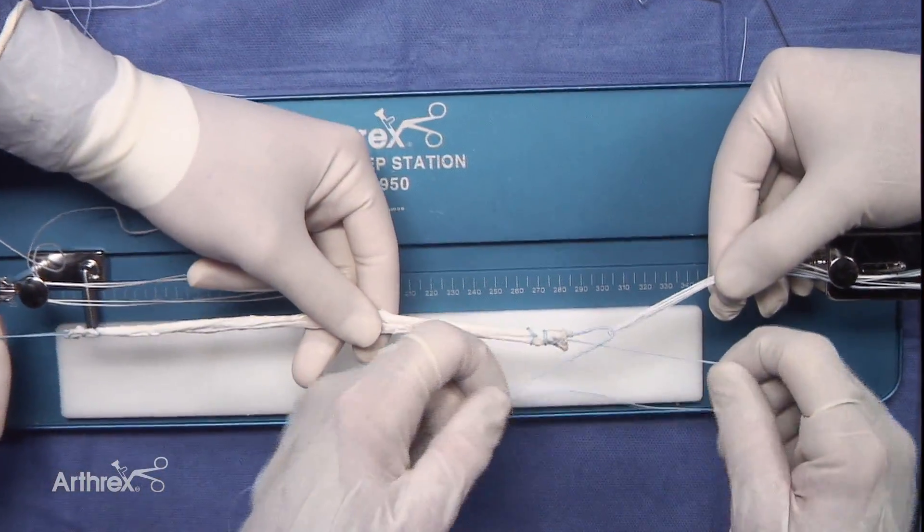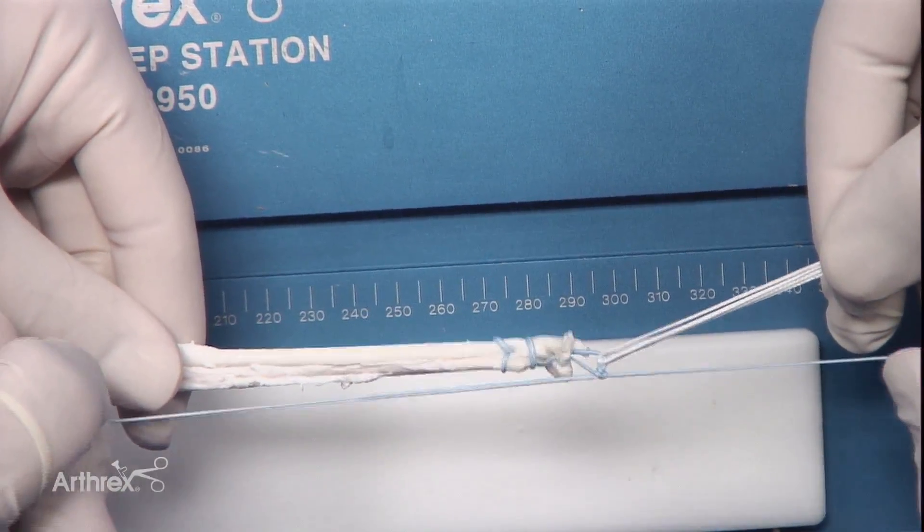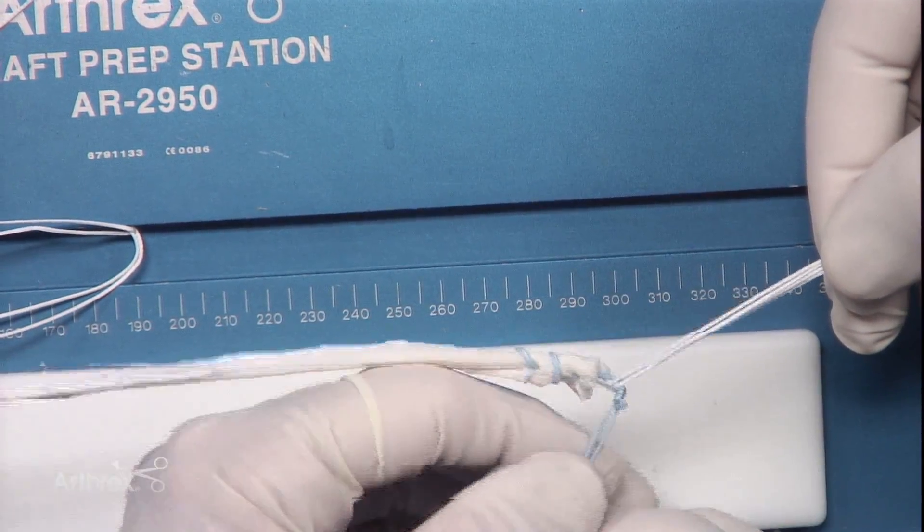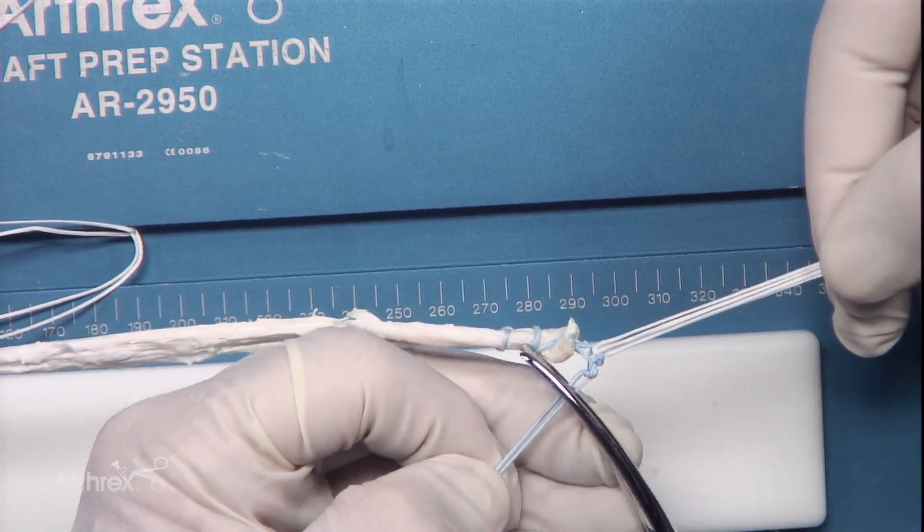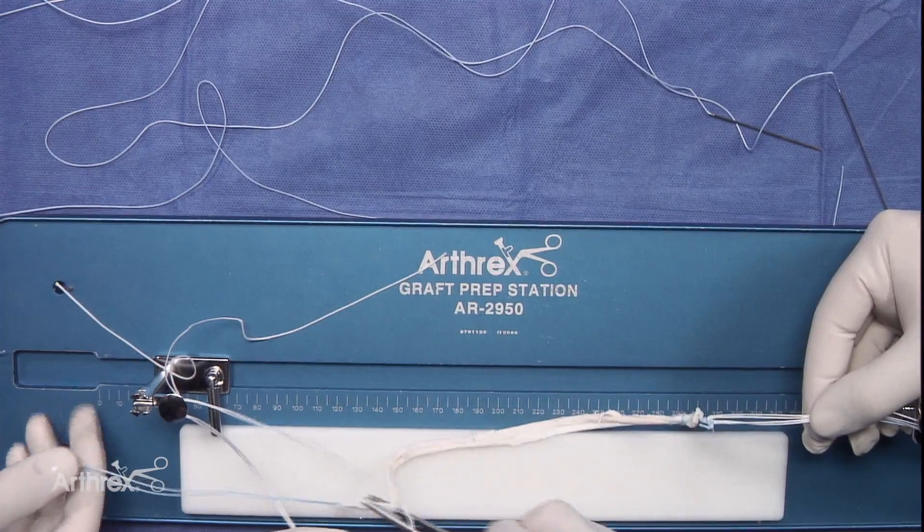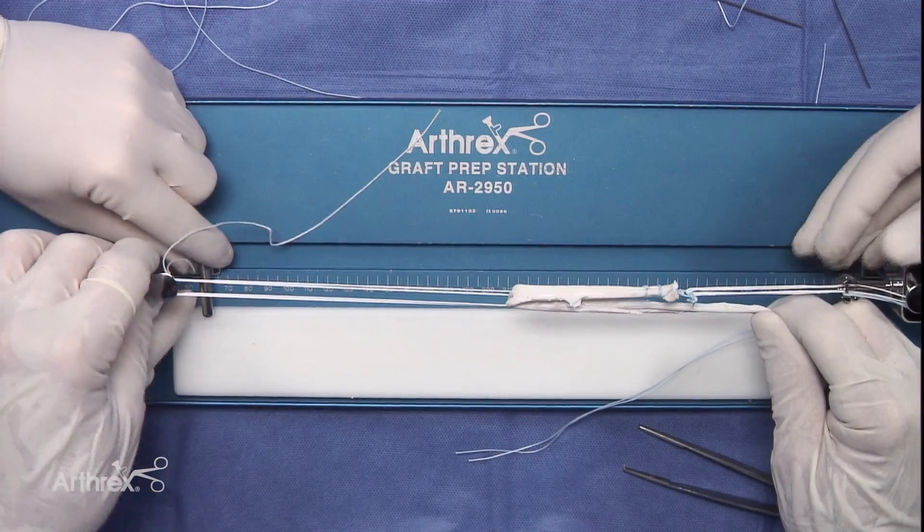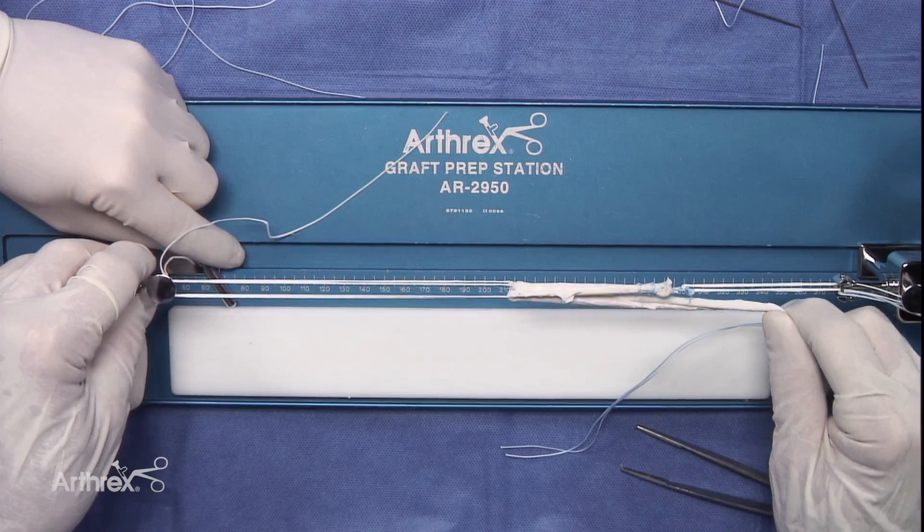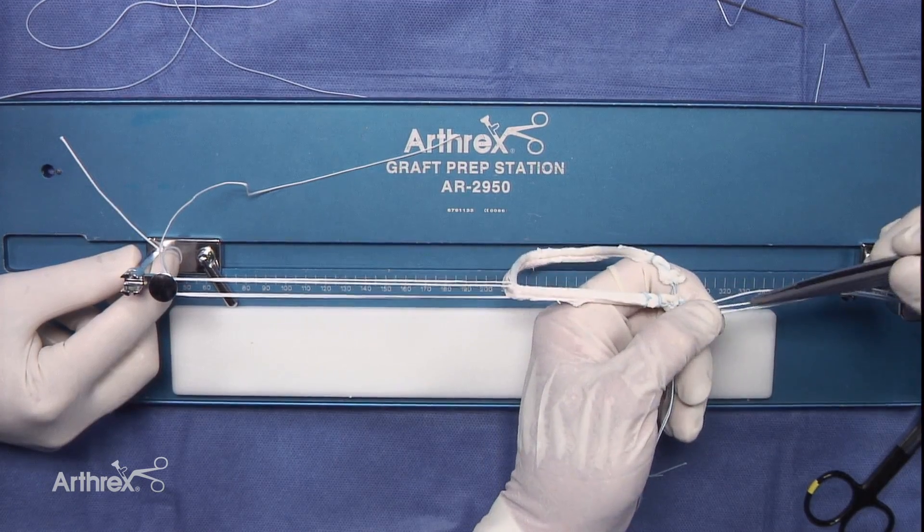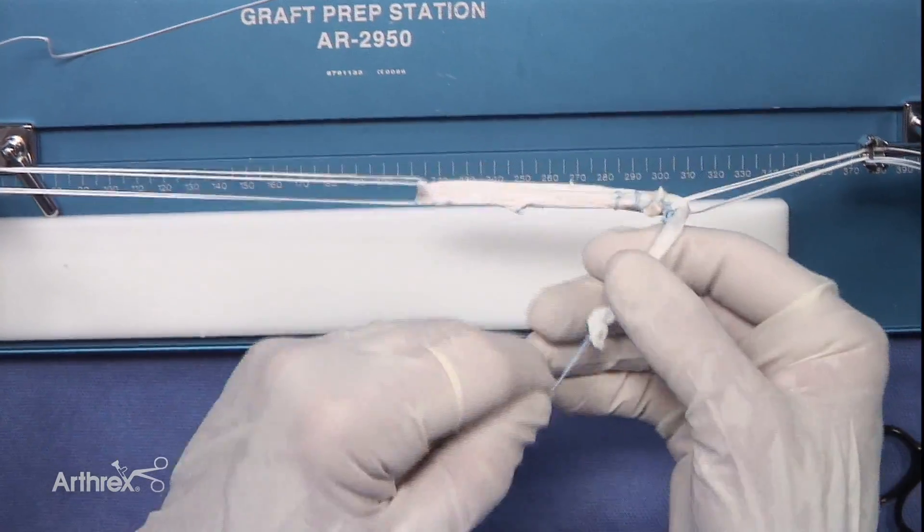We'll cut that portion. We're going to take the graft and pass that through. We're going to relax the graft station. This graft is going to be approximately 70 millimeters.